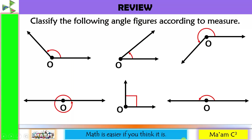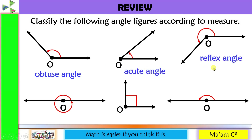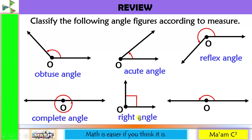Let's have a quick review of our previous lesson. Classify the following angle figures according to measure. This one is an obtuse angle. This is an acute angle. This one is a reflex angle. This one is a complete angle. This one is a right angle, while this one is a straight angle.